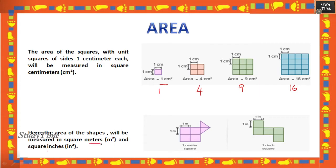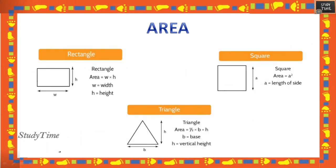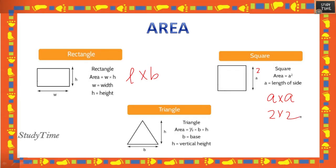Area can also be in meters or inches. Area of rectangle: width × height, or length × breadth. For a square, all sides are equal, so it is a × a. Suppose a = 2, then the area is 2 × 2. For a triangle, it is half × base × height (half bh).